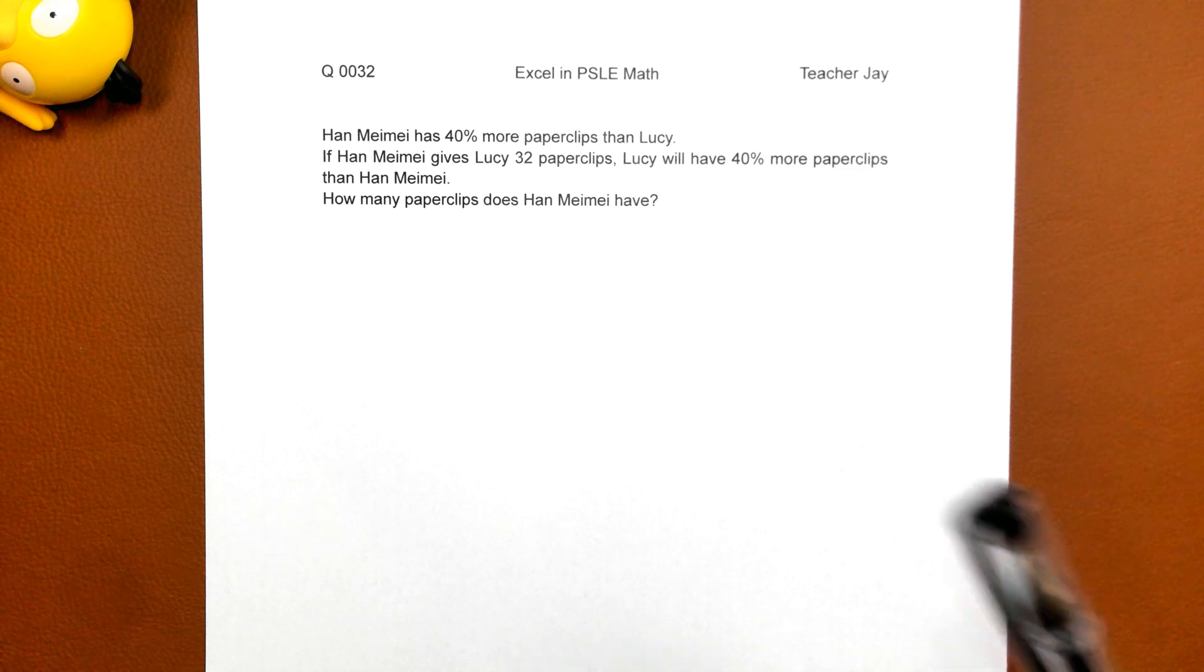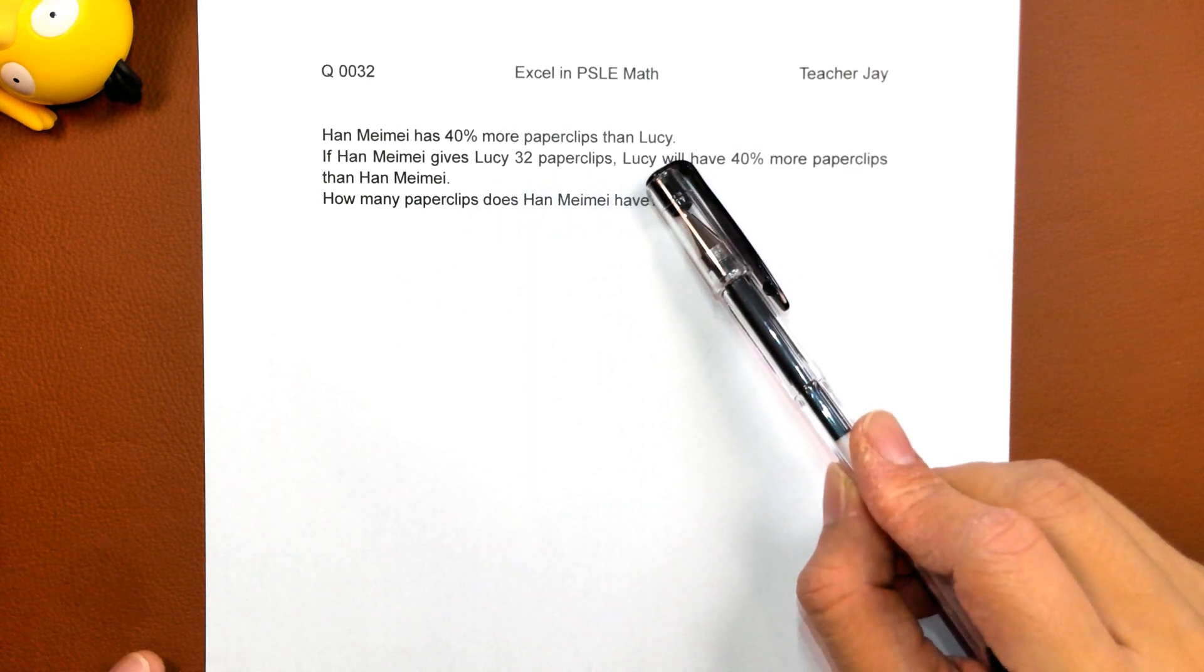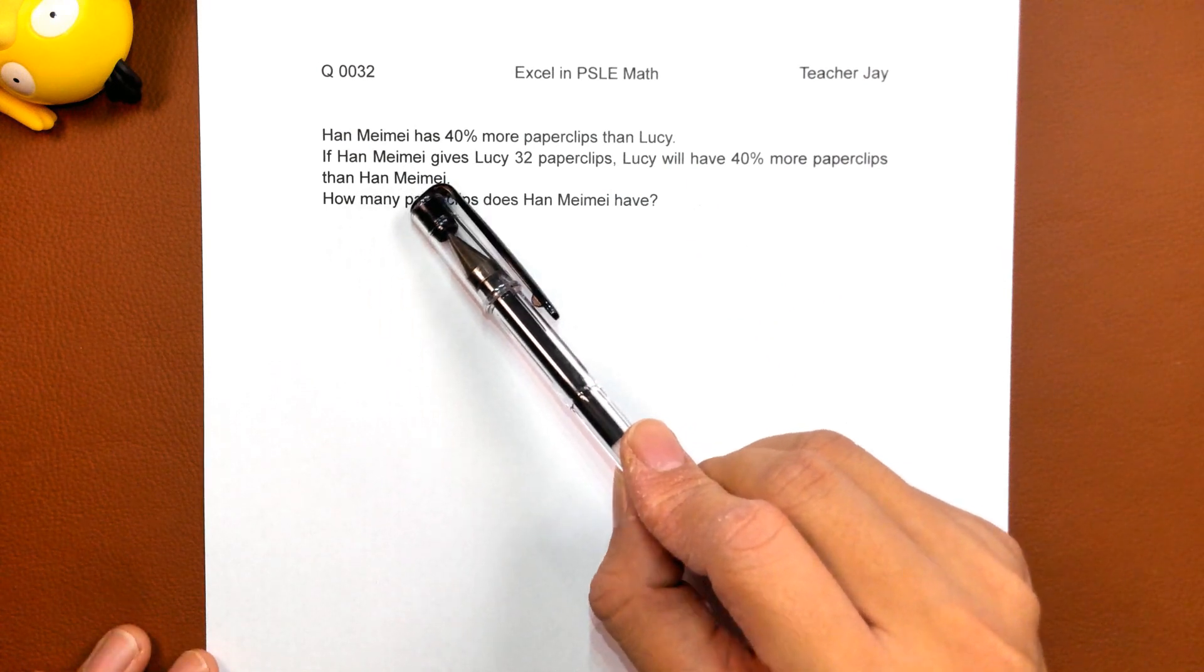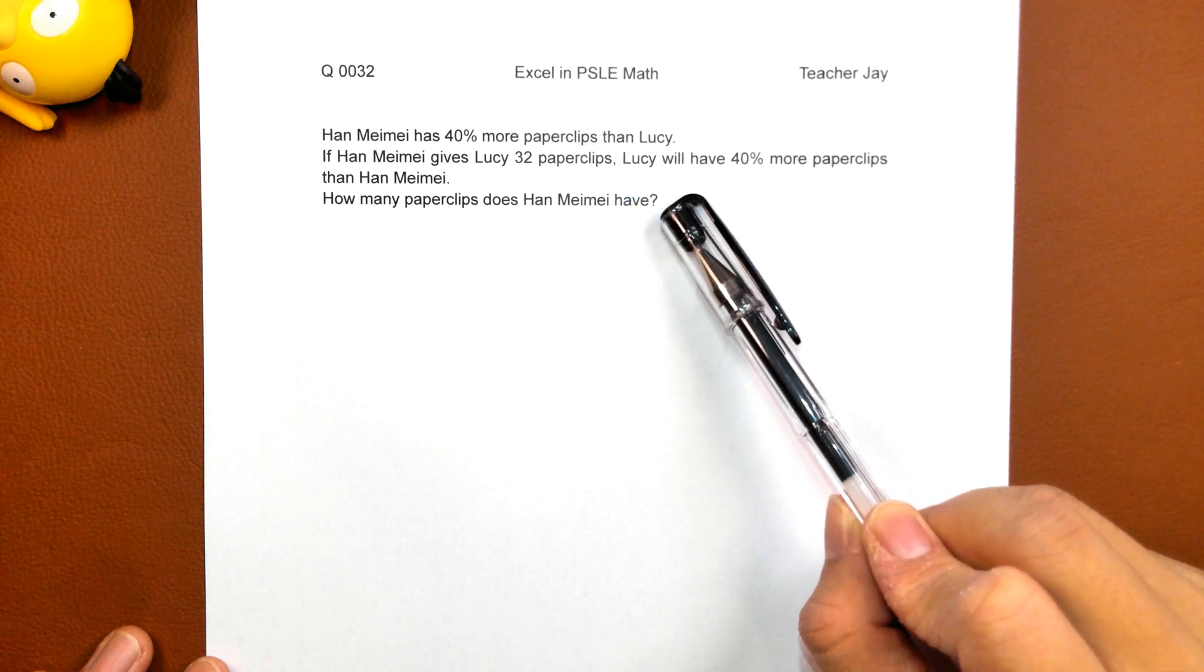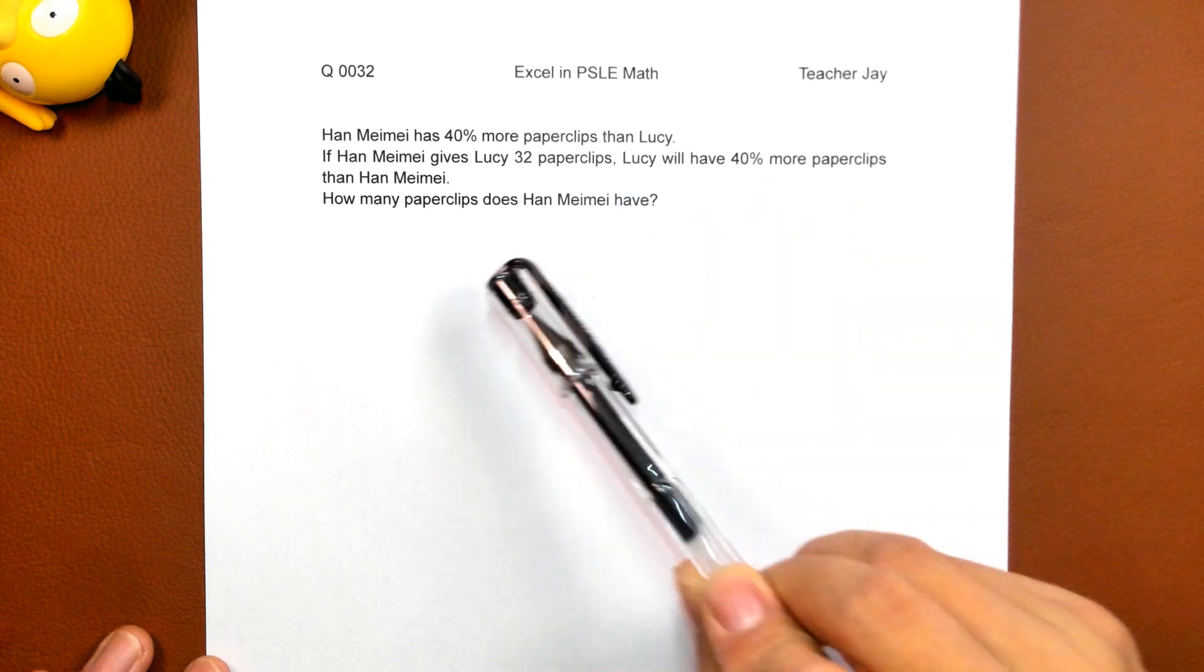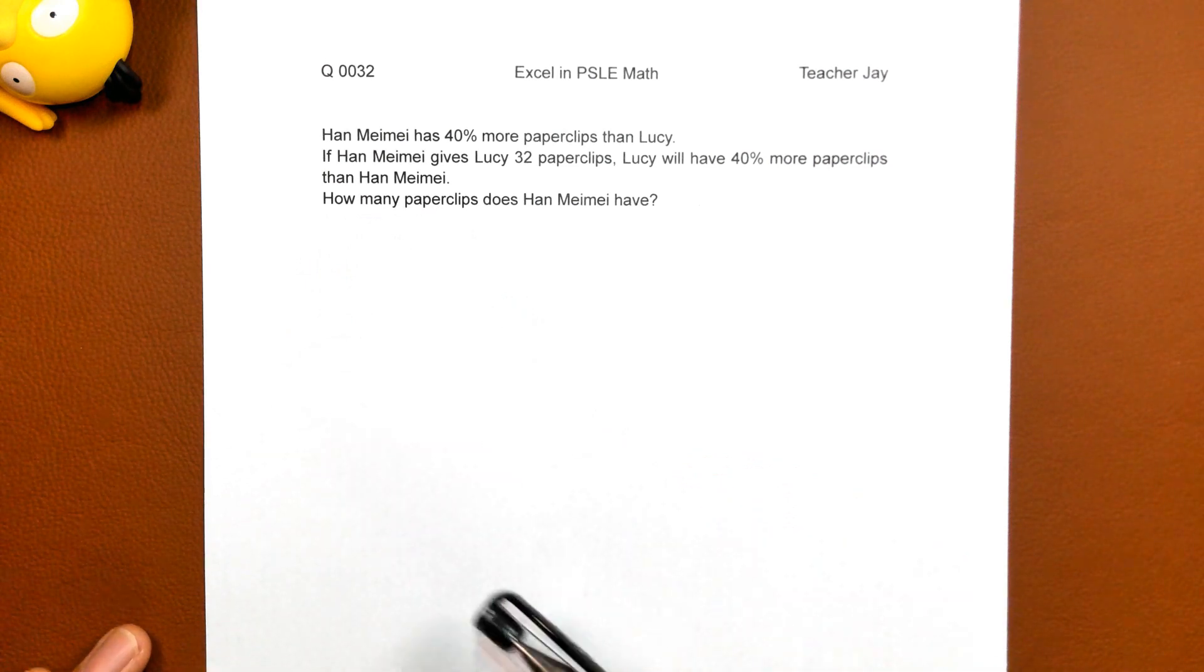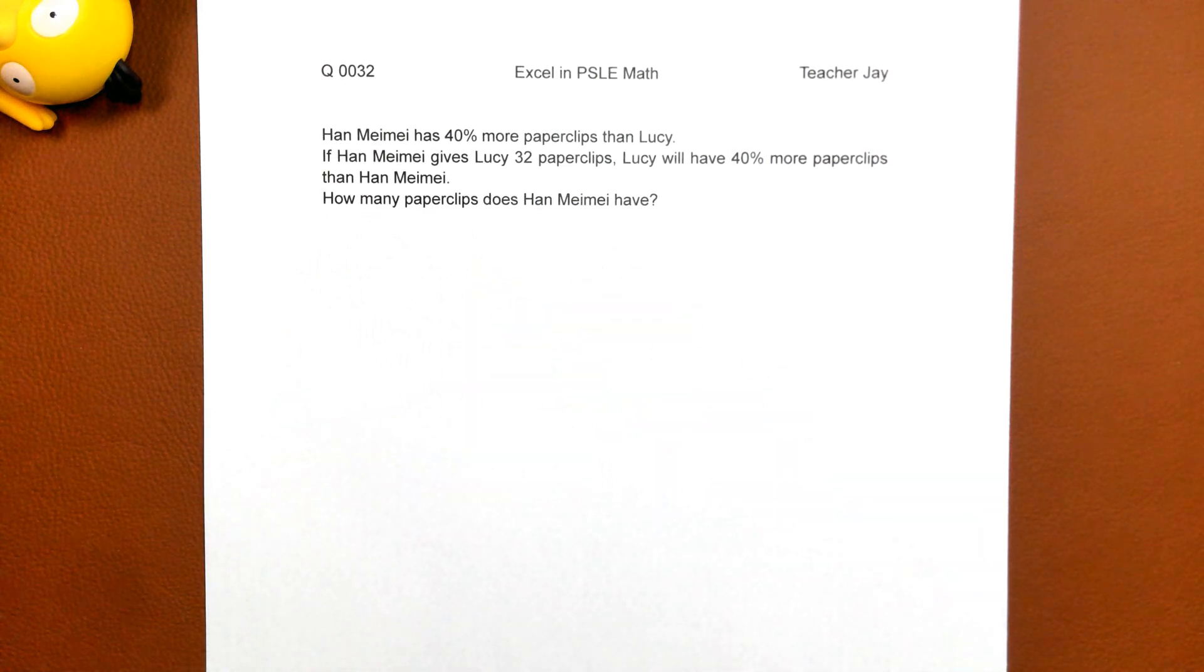Han Mei Mei has 40% more paper clips than Lucy. And if Han Mei Mei gives Lucy 32 paper clips, Lucy will have 40% more paper clips than Han Mei Mei. How many paper clips does Han Mei Mei have?